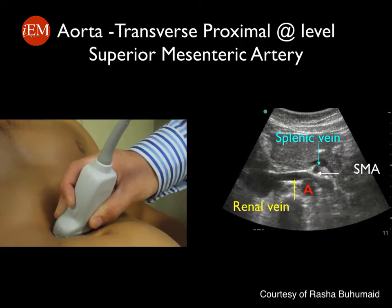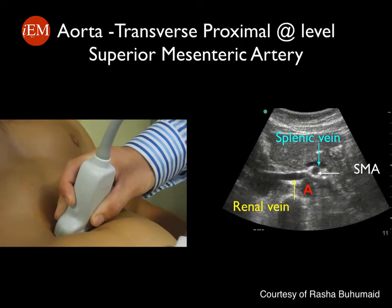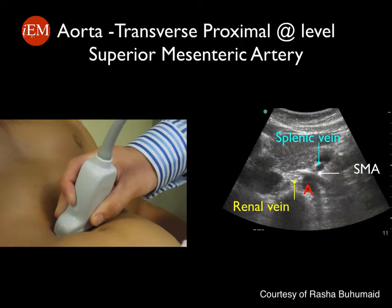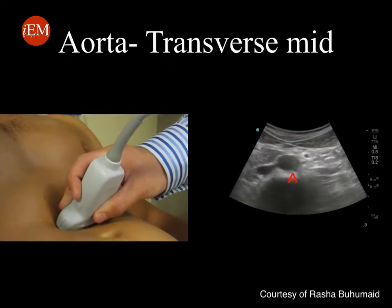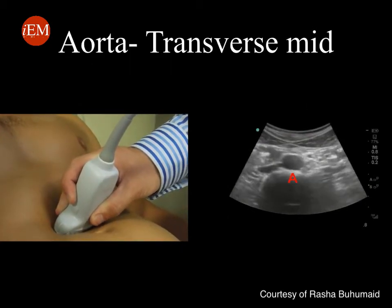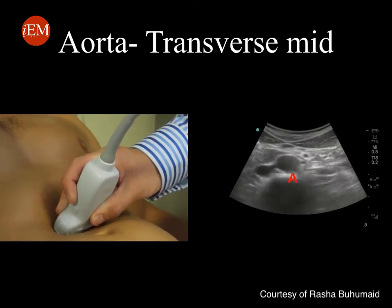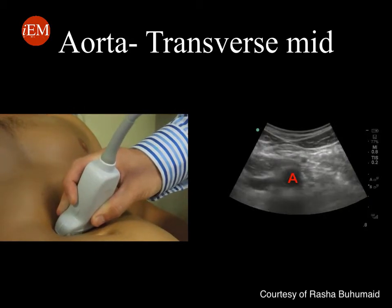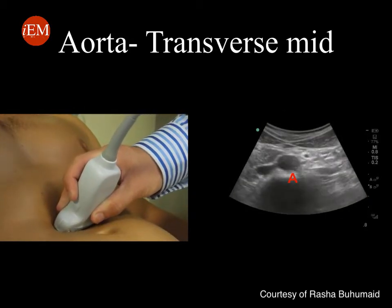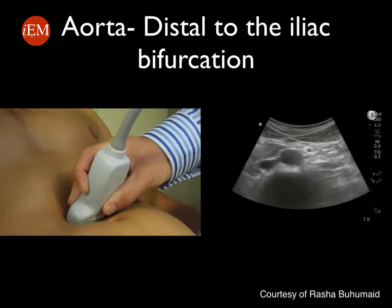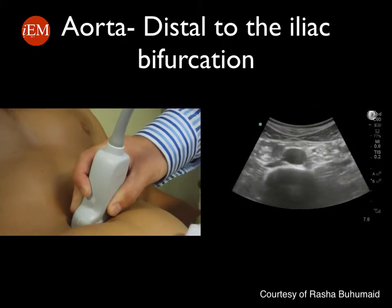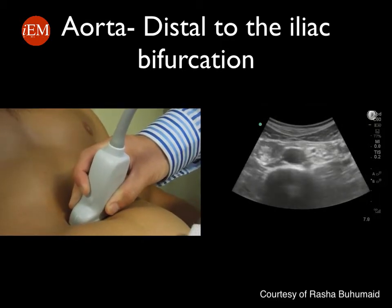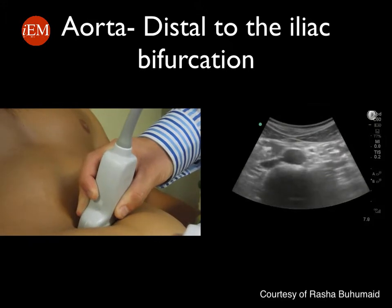Identifying these vessels is not as important as identifying the abdominal aorta and not confusing them with it. Following the aorta more distally towards the umbilicus, the abdominal aorta becomes more superficial with no distinguished vessels visible at this level. Moving more distally, the abdominal aorta then bifurcates into the common iliac arteries, usually at the level of the umbilicus.